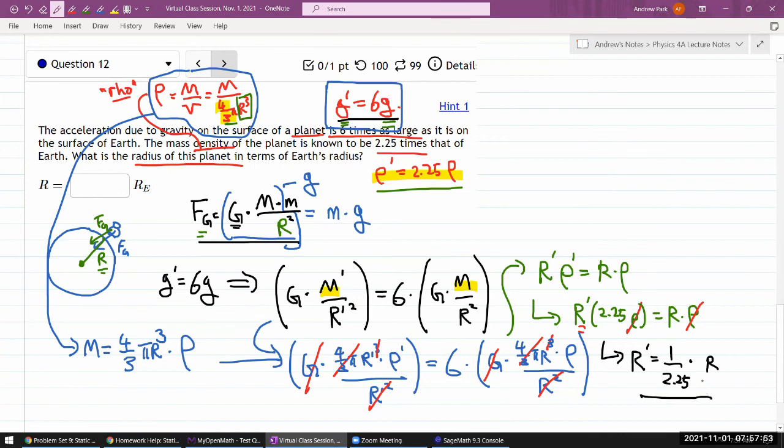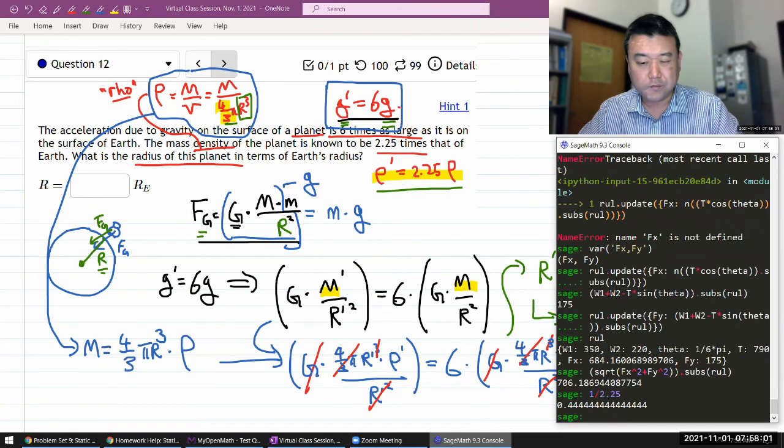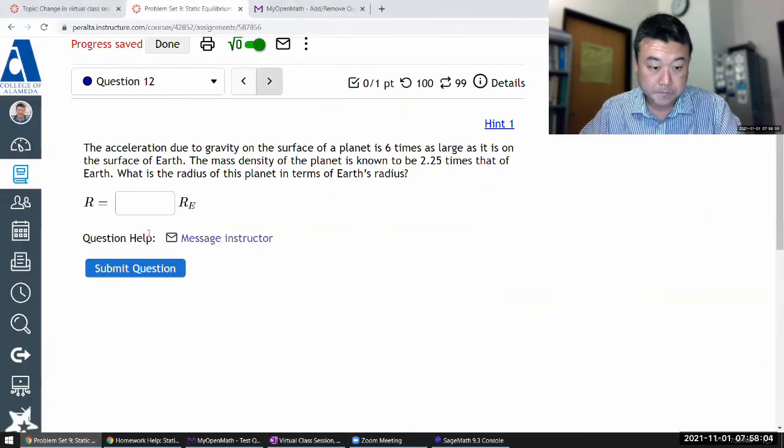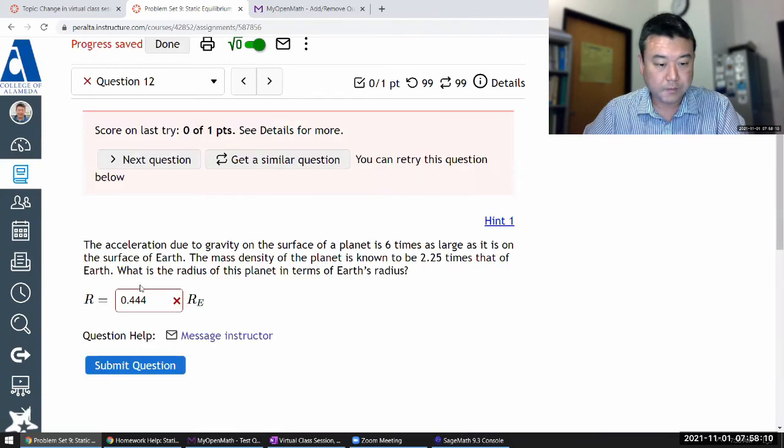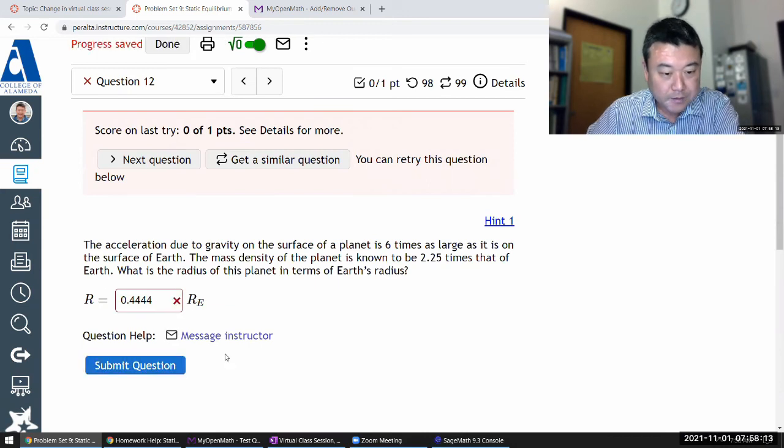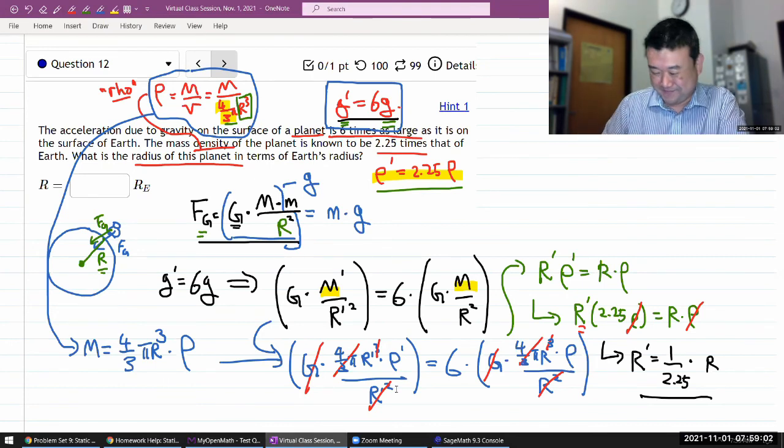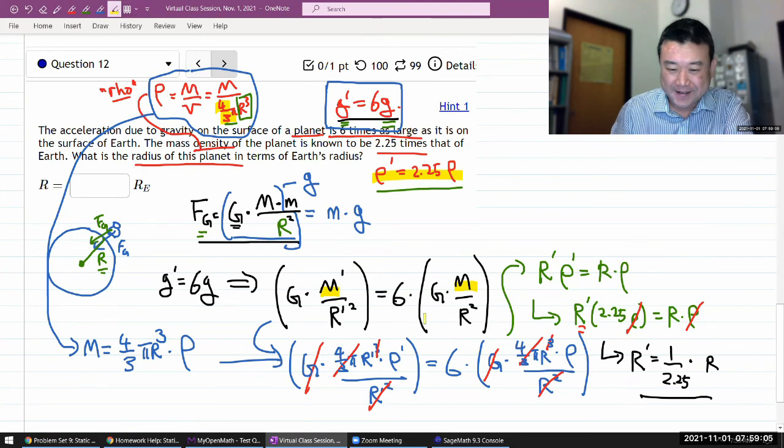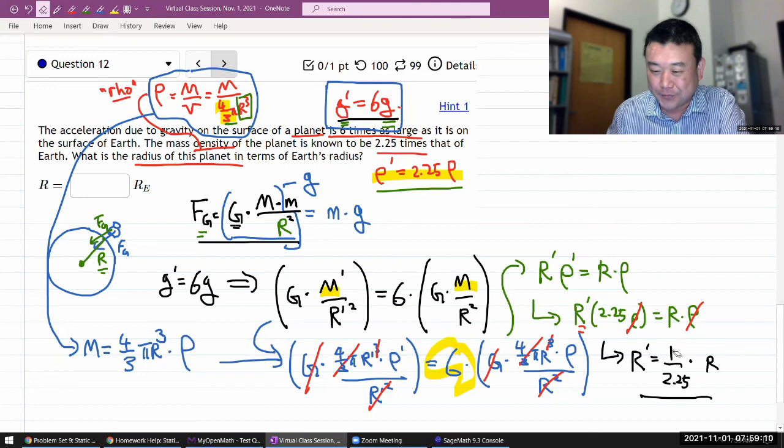That should be the answer. Let's put that in. 1 over 2.25, that's 0.444. Wait, maybe one more four. I don't know. Did I make a mistake? Let me just double check. Let's see here. Third power. Oh, I forgot this six here. I had this six. So it should be six divided by 2.25.